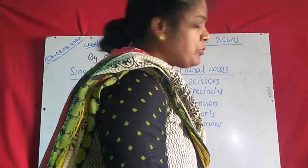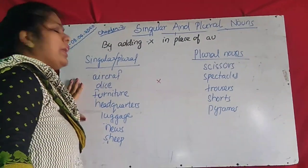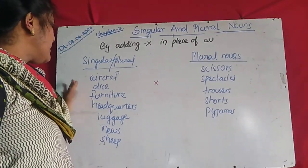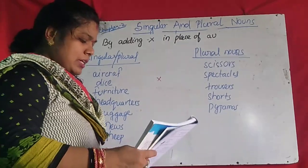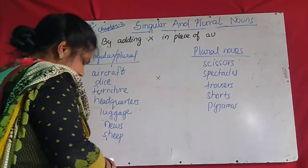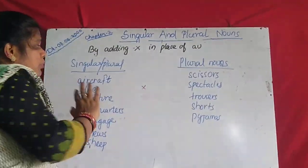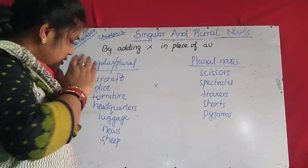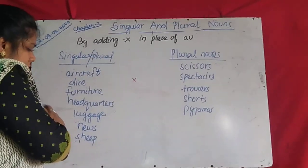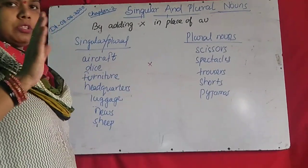So now some points to remember given in your book: some nouns are both singular and plural. Just like 'aircraft' — if you write 'aircrafts' that is wrong. If you add S or ES, that will be wrong, because these words are used for both singular and plural and don't have a separate plural word. So 'dice,' 'furniture,' 'headquarters,' 'news,' 'scissors' — these words are used for both plural and singular.